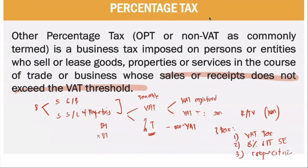Percentage tax applies if you are non-VAT, meaning you are not VAT registered or you did not meet the VAT threshold. It does not apply if you are a VAT taxpayer, if you apply the 8% gross income tax as a self-employed individual, or if your business is a cooperative.